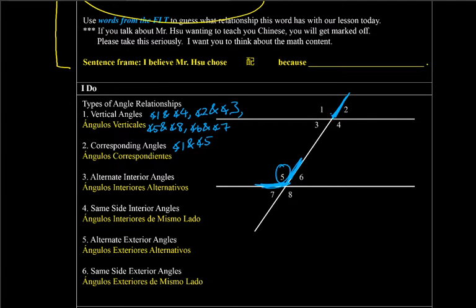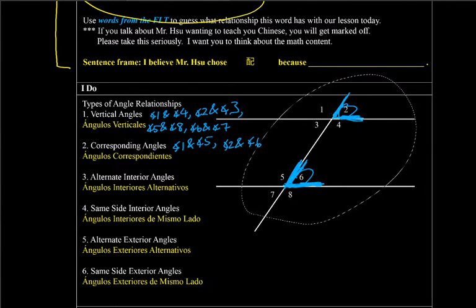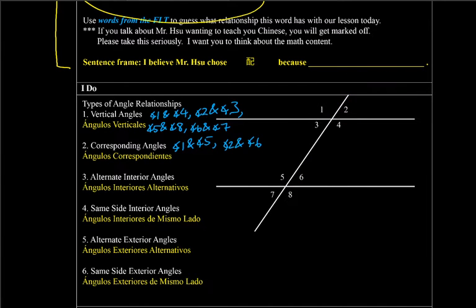So if we look at angle 2, y para ángulo 2, we have the same exact thing there. ¿Cuál ángulo es exactamente el mismo? 2 — es 2 y 6. Exactly: 2 and 6 are the same. Those are corresponding angles — same positions. And how about angle 3? 3 and 7 — bottom left. Abajo a la izquierda. How about 4? Las últimas: 4 y 8.